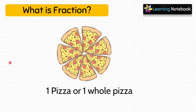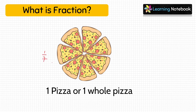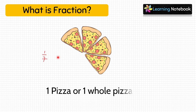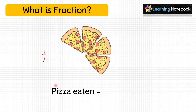Now consider this whole pizza. It consists of 7 equal parts, so each part equals 1 by 7. Suppose we ate 3 parts of this pizza — then the fraction of pizza which has been eaten is 3 by 7. This fraction means 3 parts of pizza have been eaten out of 7 parts.